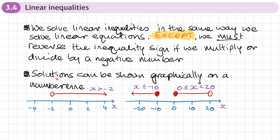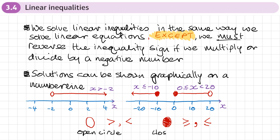Solutions for linear inequalities can also be shown graphically on a number line. For example, x is greater than 2 uses an open circle — a circle that's not coloured in — which we use for greater than or less than symbols. A closed circle, one that is coloured in, is used for greater than or equal to, or less than or equal to.